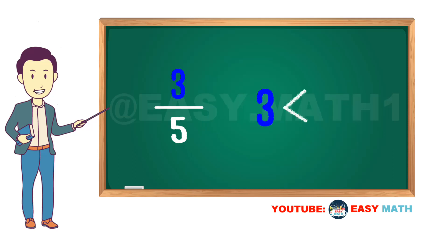A proper fraction is a fraction where the numerator is less than the denominator. For example, three fifths, one quarter, five sevenths. The value of a proper fraction is always greater than zero but less than one.